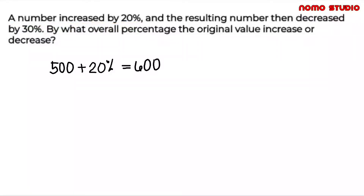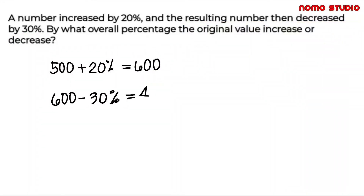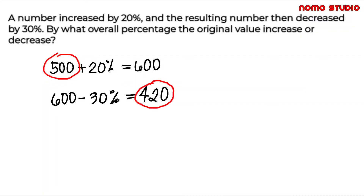Then, this resulting number is decreased by 30%, meaning 600 minus 30%, which is equal to 420. Now we will get the difference between 500 and the resulting number after being decreased by 30%, which is 420.